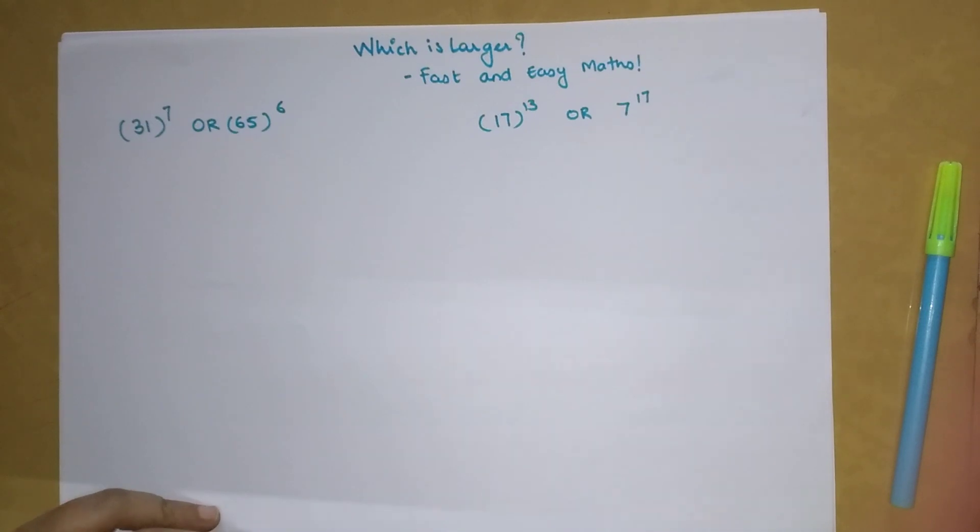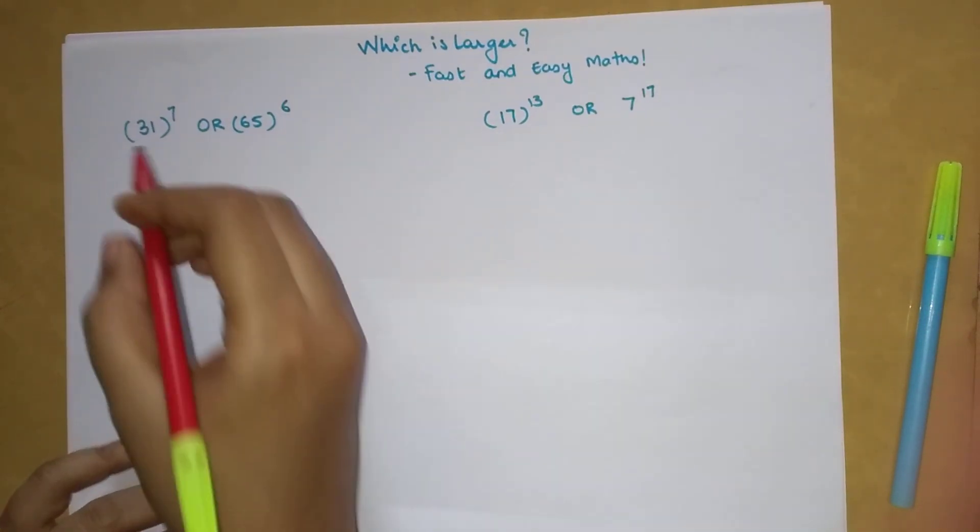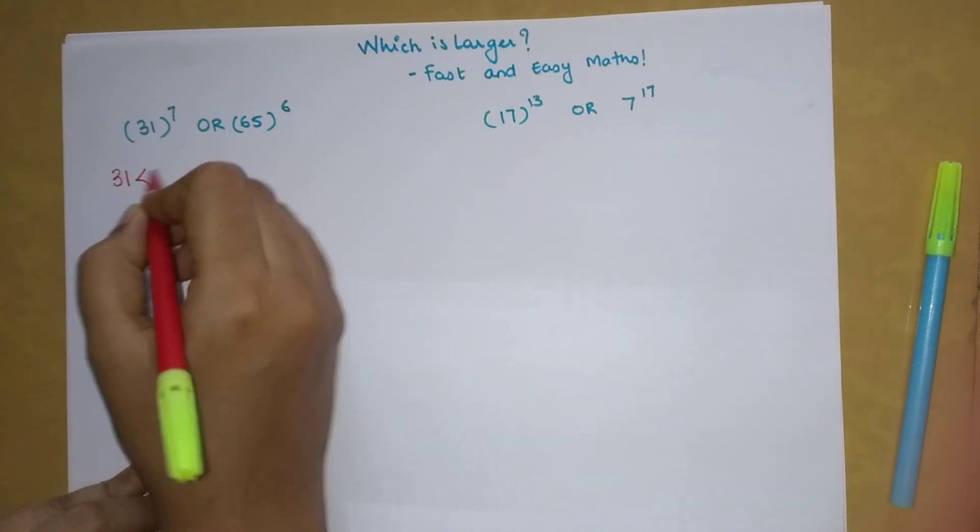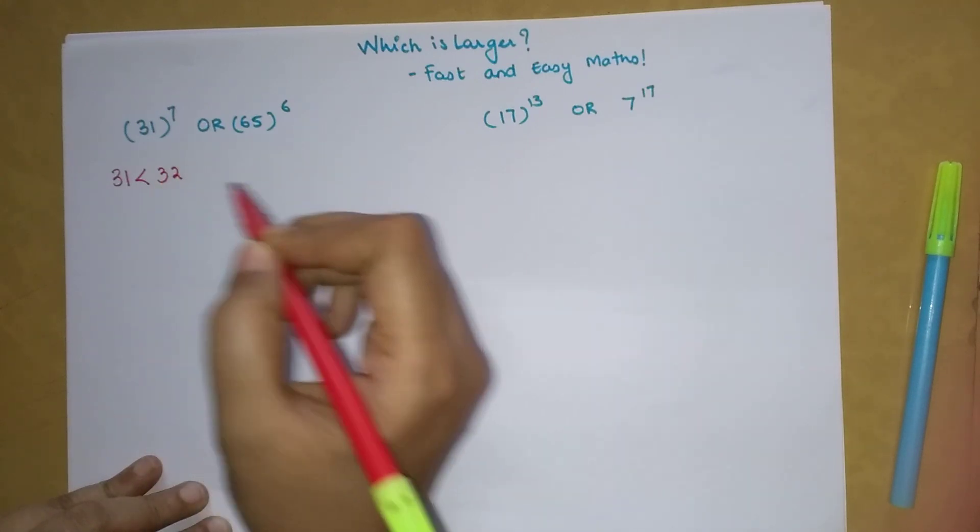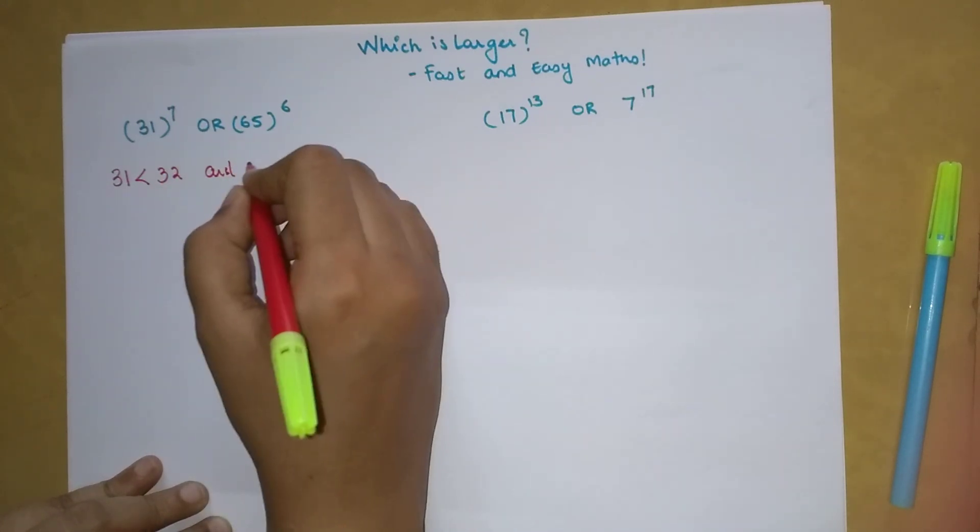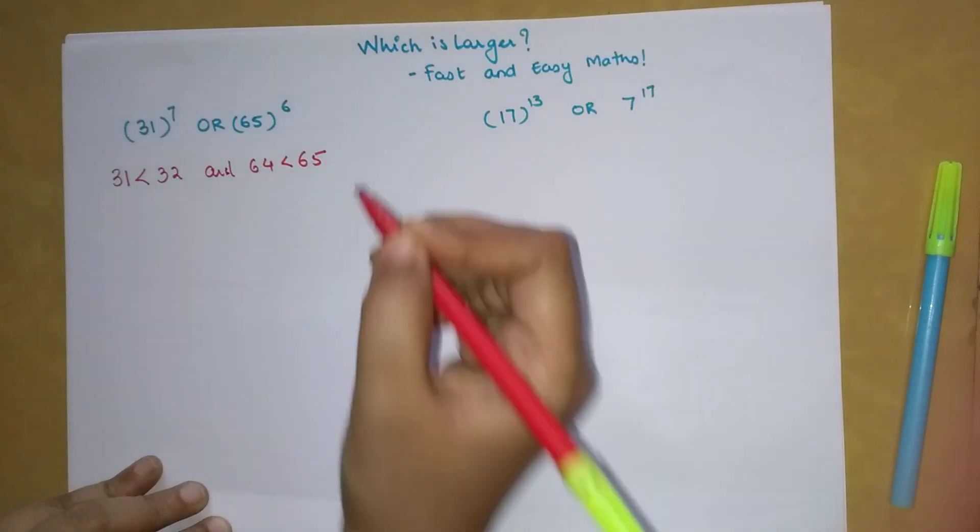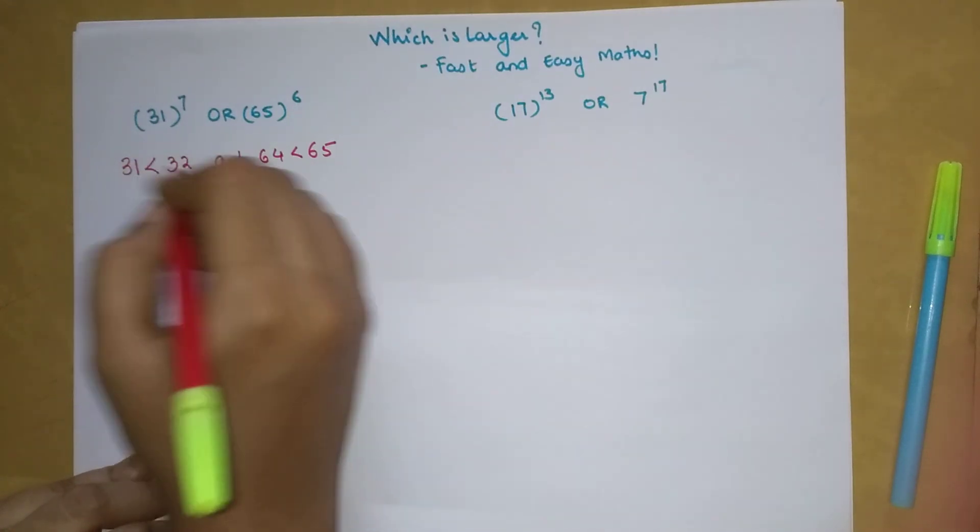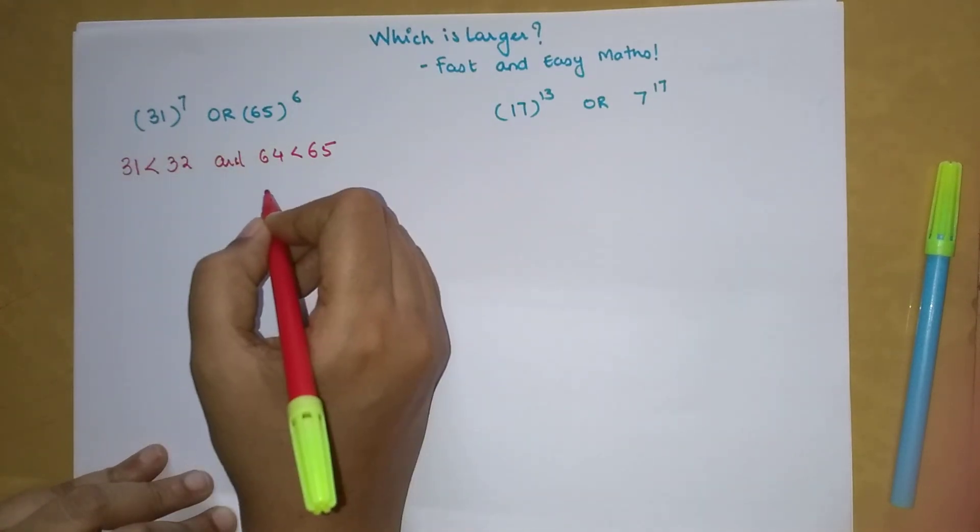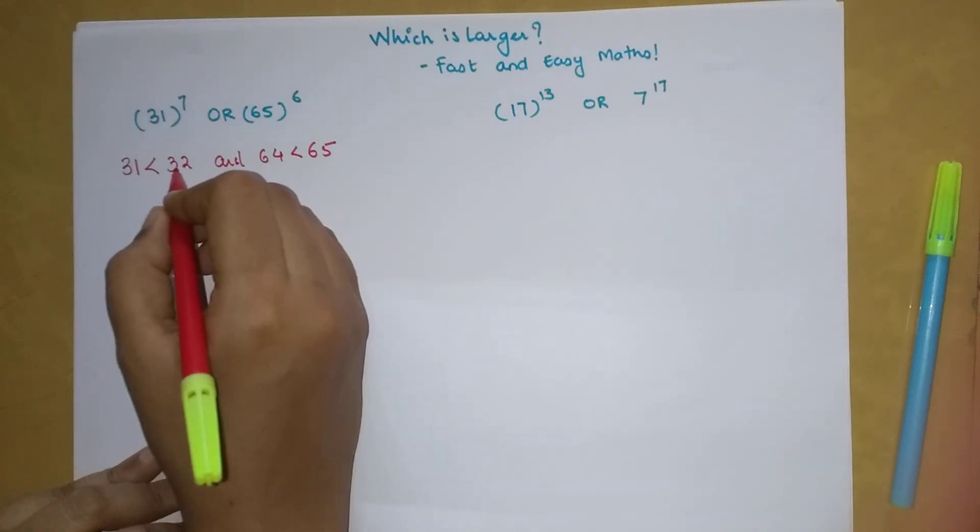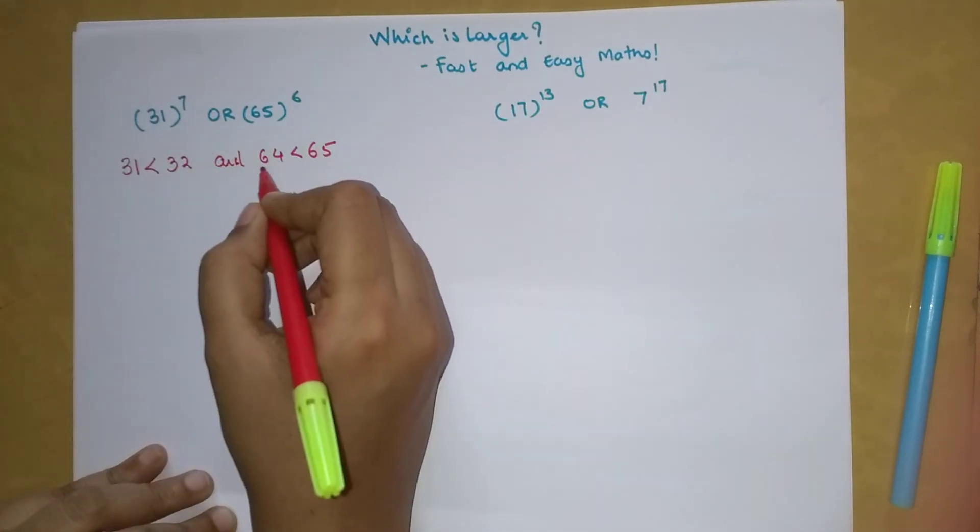Now here I know that 31 is less than 32, and I know that 64 is less than 65. You will very soon understand why I've taken 32 and why I've taken 64. I can write 32 in powers of 2, similarly 64 also I can write in powers of 2.